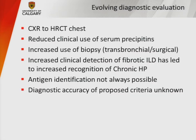Over time, things have changed. We no longer rely on chest x-ray; most practices move on to a high-resolution CT scan. The use of serum precipitins is debated — in many large centers it's not used at all. We've increasingly recognized chronic HP, antigen identification is not always possible, and importantly, the accuracy of prior proposed diagnostic criteria has never been prospectively tested — no one has applied them and measured specificity.